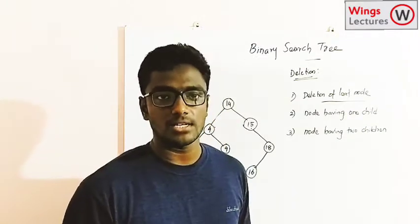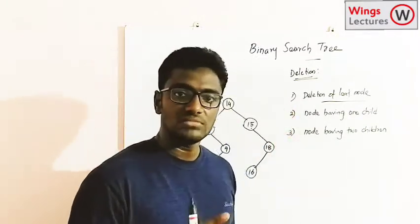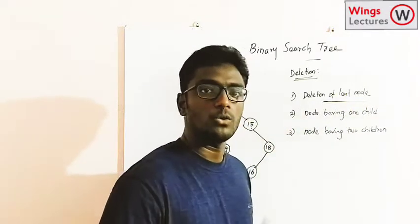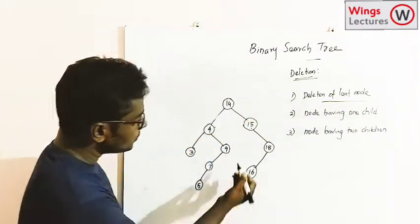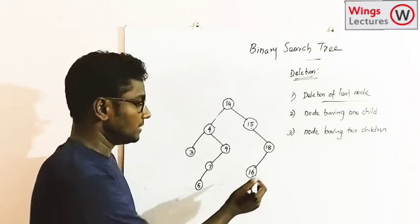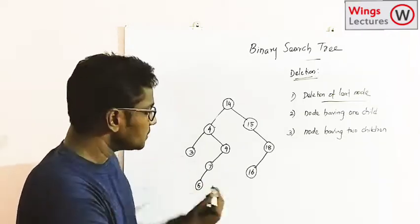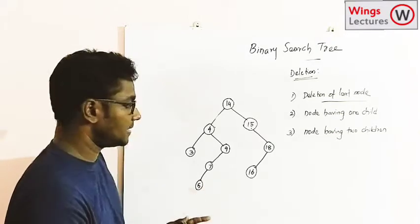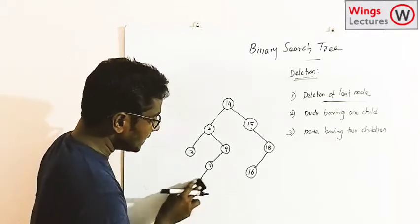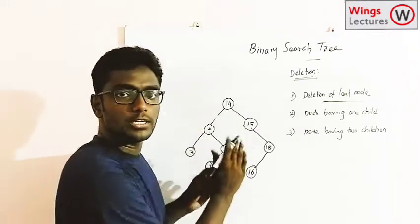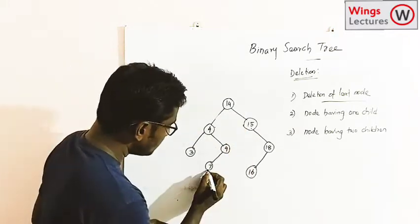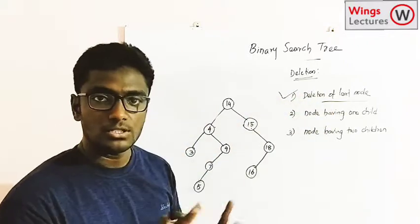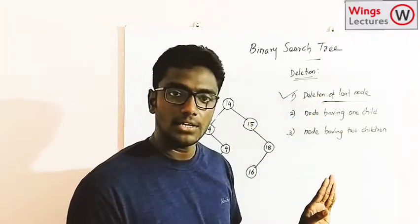The next operation is deletion. There are different categories. The first condition is deletion of a leaf node — a node that doesn't have any child. For example, leaf nodes here are 3, 5, and 16. If I want to delete a leaf node, there is no issue — simply go to that location and delete it. Deleting 5 doesn't disturb the whole tree.